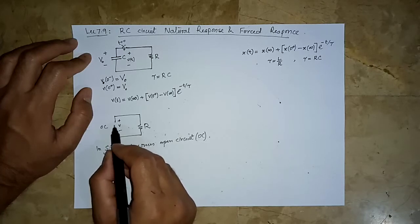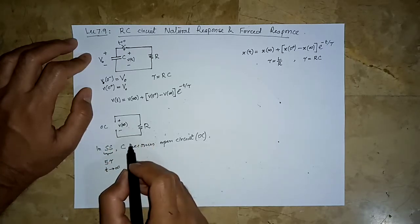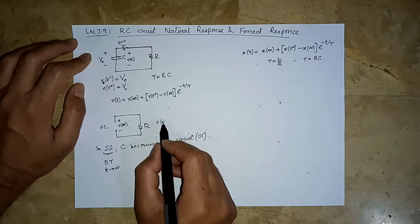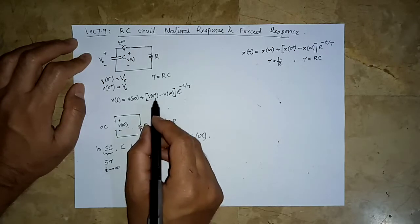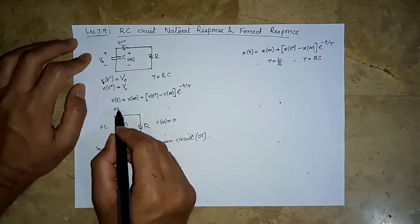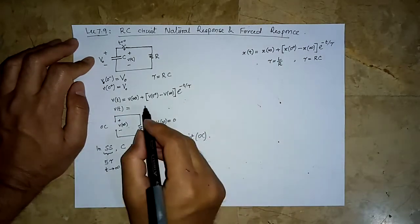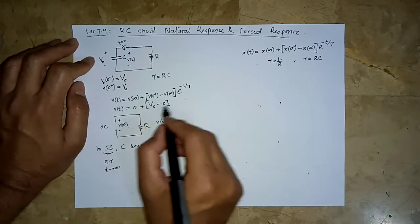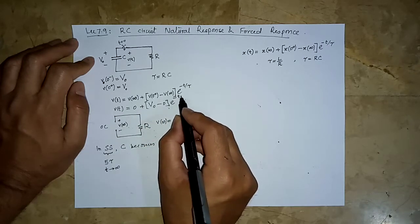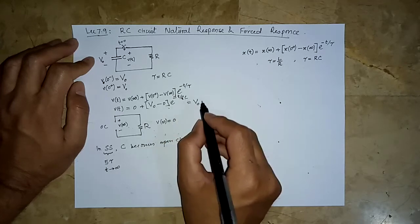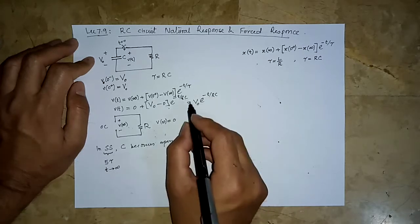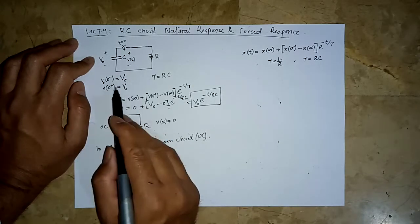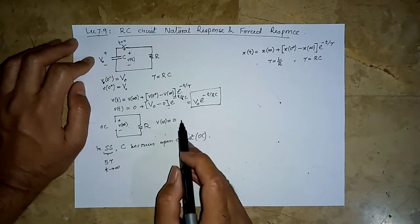The capacitor becomes open, leaving only R. We are finding the voltage across this open circuit. Since there is no source, V(infinity) equals zero. V(0+) is V₀. So V(t) equals zero plus V₀ minus zero, times e raised to the power minus t over RC — which simplifies to V(t) = V₀ · e^(-t/RC). Those who want to verify can use KVL or KCL to derive the differential equation and get the same result.